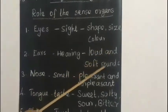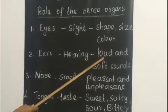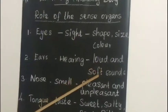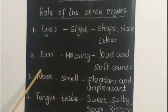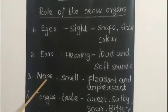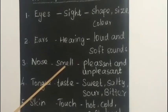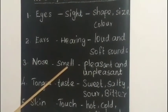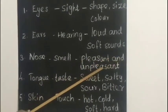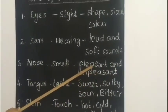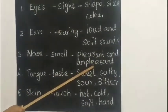The role of the ears is to hear loud and soft sounds. Loud sounds are big, noisy sounds, and soft sounds are mild, quiet sounds. Next is the nose. We can smell with our nose — the role of the nose is smell: pleasant and unpleasant smells.